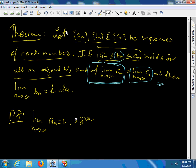Given epsilon greater than zero, there exists an N1 such that whenever N is bigger than N1, that guarantees us that aN minus L in absolute value is less than epsilon.